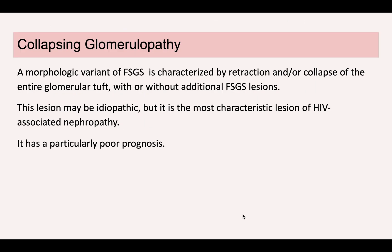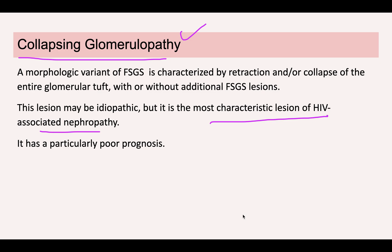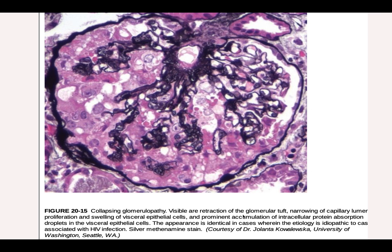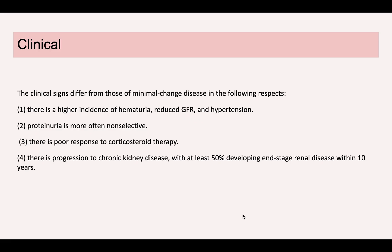There are variants of FSGS, including tip variant and perihilar variant. A particularly important one is collapsing glomerulopathy, the characteristic lesion of HIV-associated nephropathy. In this variant, the entire glomerular tuft collapses — there is retraction of the entire capillary tuft — and it carries a particularly poor prognosis.